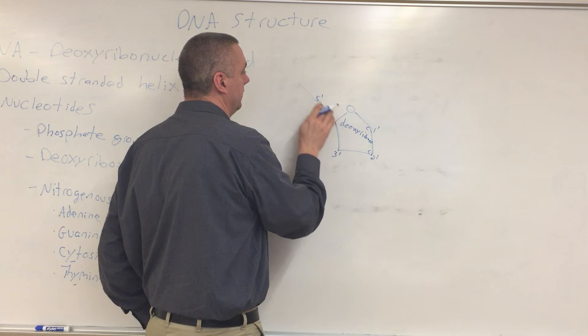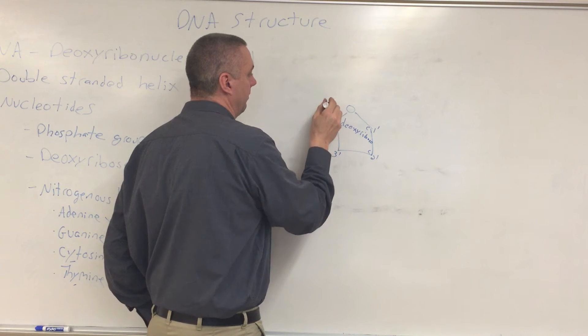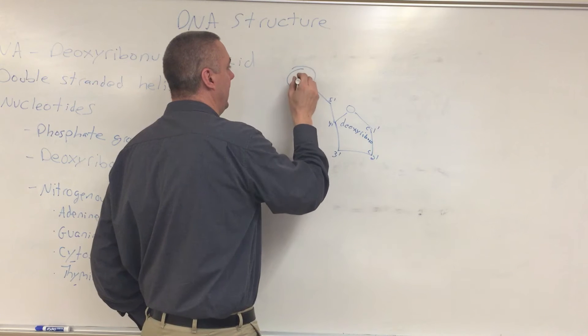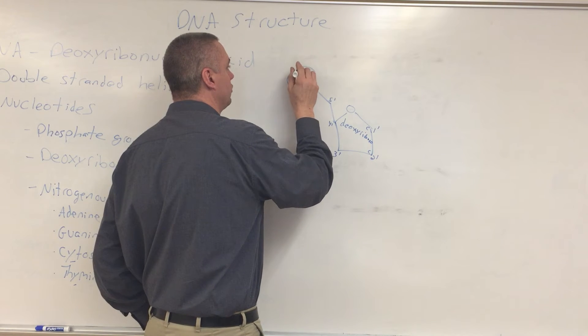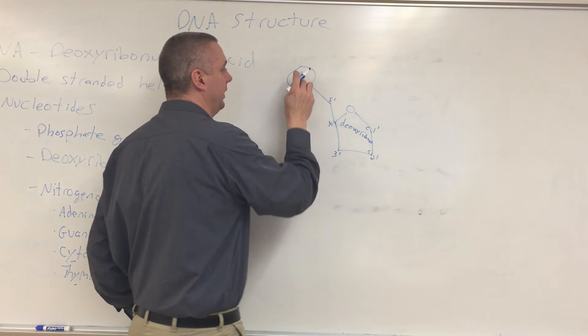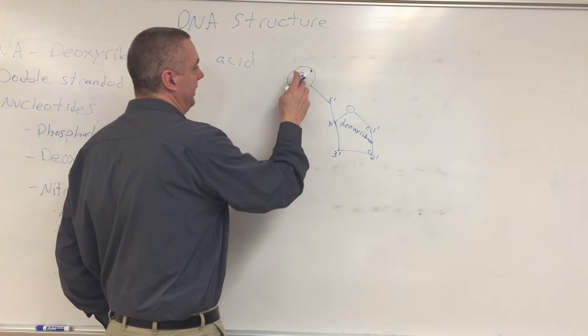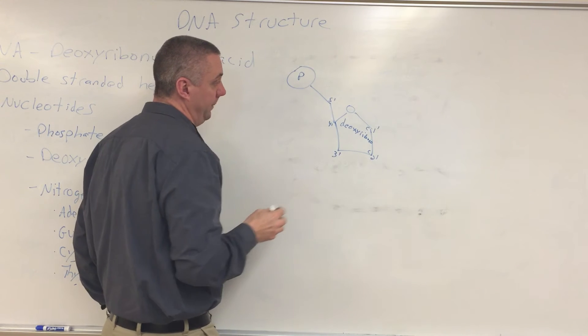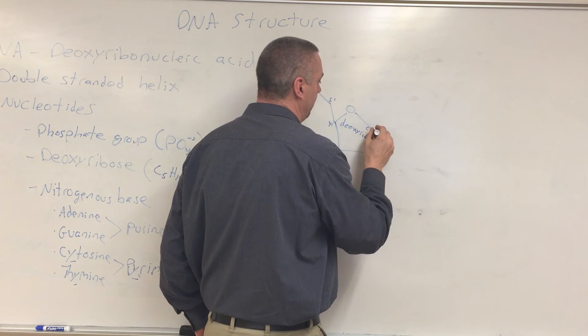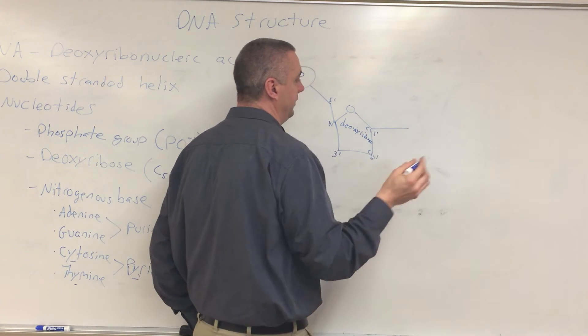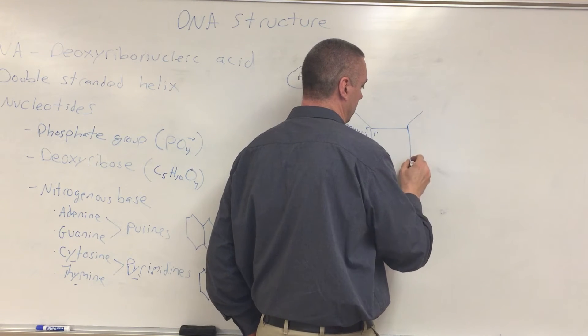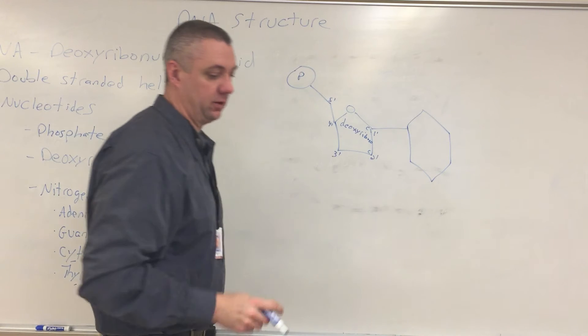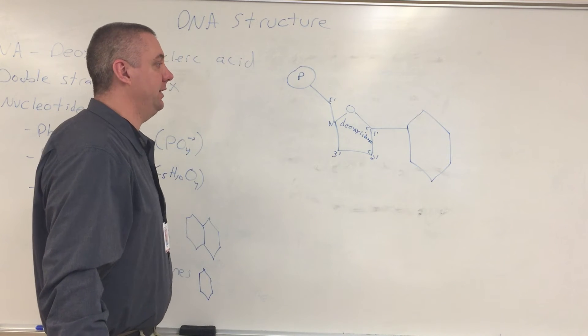Attached to the five prime carbon is the phosphate group. And if you're just drawing the model, you can just put a circle with a P to make the phosphate group. And then attached to the one prime will be your nitrogenous base. We'll just draw them like that. Little hexagons. So that's a nitrogenous base.